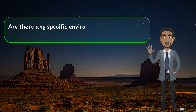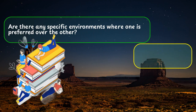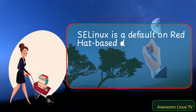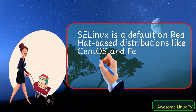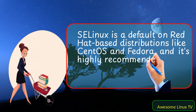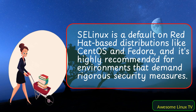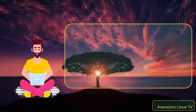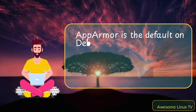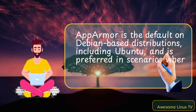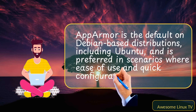Are there any specific environments where one is preferred over the other? SELinux is the default on Red Hat-based distributions like CentOS and Fedora, and it's highly recommended for environments that demand rigorous security measures. AppArmor is the default on Debian-based distributions, including Ubuntu, and is preferred in scenarios where ease of use and quick configuration are important.